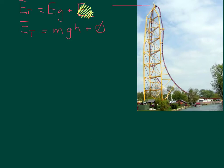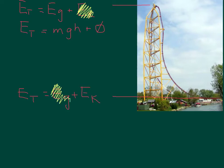We don't have to worry too much about the mass of the cart, because we'll see in a little while that it really doesn't matter for this calculation. At the bottom, total mechanical energy is still a combination of gravitational potential energy and kinetic energy. If you reach the bottom of the hill and there's no height left, you have no gravitational potential energy, so that goes to zero. The total mechanical energy at the bottom is going to be all kinetic energy, or one-half mv squared.